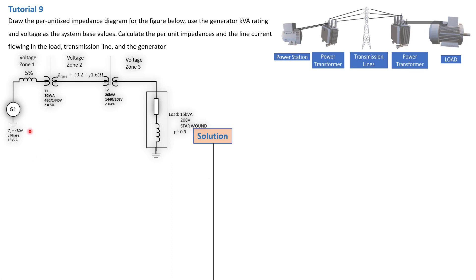Now in this tutorial, we're going to continue where we left off, because we were asked to draw the per unit task impedance diagram, and then to calculate the per unit impedances and the line current flowing in the load, transmission line, and the generator. So first, we need to know the current that is flowing in the load — that is this current, that's I load.